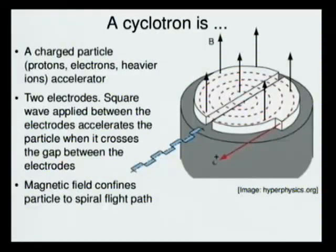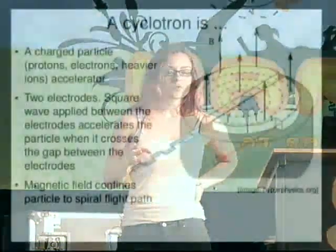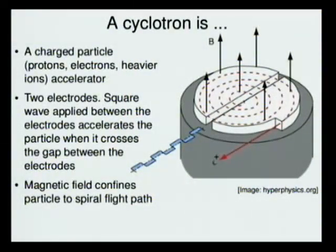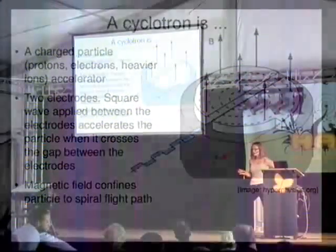So now, just starting very basically, talking about what a cyclotron is: it accelerates charged particles — things like electrons, protons, or heavier ions — using an electric field. It has two electrodes and accelerates the charged particles across that field. They have to be charged particles because you're accelerating them using an electric field; if they were neutral, the field wouldn't do anything to them. Furthermore, there's a magnetic field in place, completely separate from the electric field, that confines them to a spiral flight path.